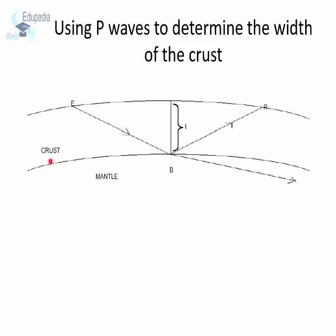Consider the figure. E is the point on the Earth's surface where an artificial explosion is created. As a result, seismic waves will travel in all directions. P waves will also travel in all directions. One such P wave will travel along the path E-B. Upon reaching the crust-mantle boundary, which is known as the Mohorovicic Discontinuity or simply the Moho, it is partly refracted into the mantle and partly reflected back to the surface of the Earth, where it is recorded at a seismic recording station R.